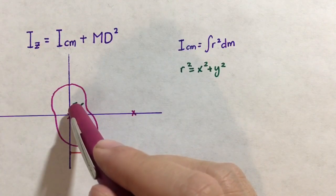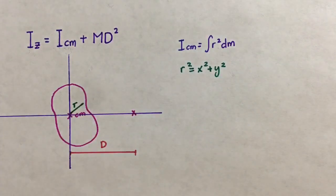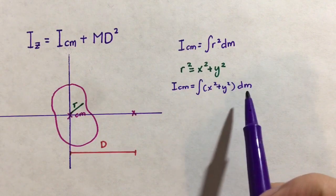R squared can be found by using the x-coordinate squared plus the y-coordinate squared by the Pythagorean theorem. Therefore, we can rewrite our integral as the integral of x-squared plus y-squared DM.